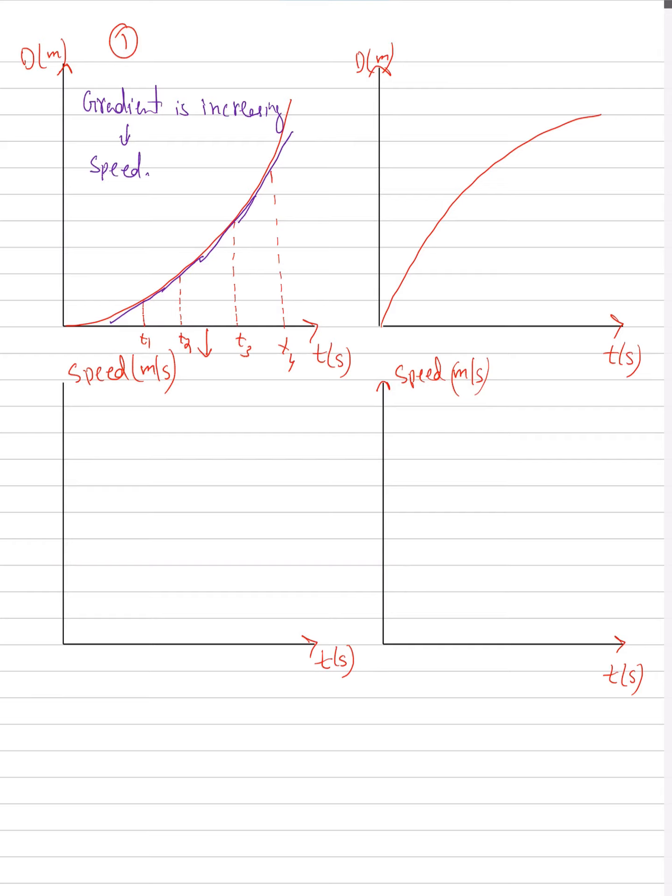Why is that? Because as we said earlier, when you divide the distance by time, distance upon time is equal to speed. So that means here our distance is increasing at an increasing rate. Increasing rate means that our speed is increasing at every time.